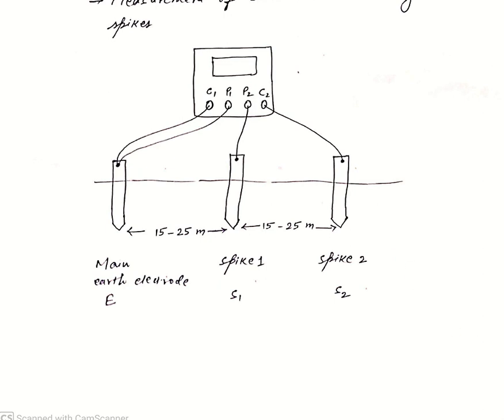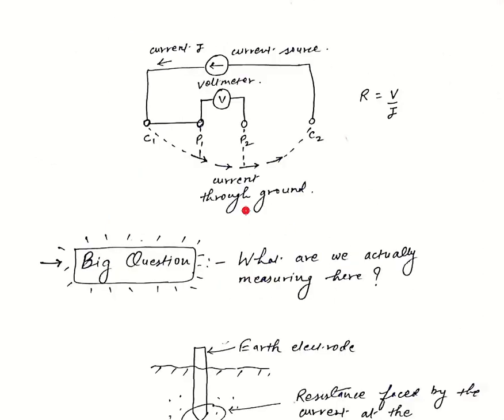If we look at the circuit diagram of the instrument, we see that C1 and C2 are connected with the current source and P1 and P2 are connected with the voltmeter. There is a fixed amount of current that flows through the source, then through C1, then through the ground and then to C2.